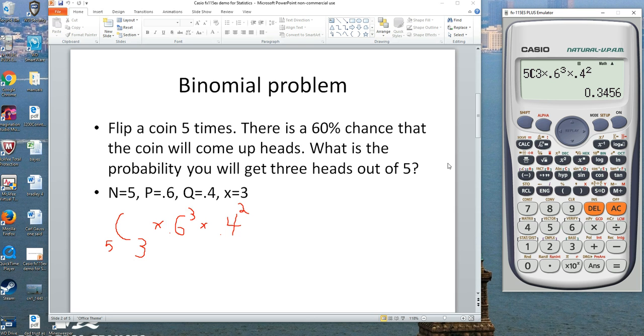Let me show you a second way to do this. If you hit mode and you hit the down arrow, they've got all the distributions already built in for you here. Let's hit binomial, which is four.